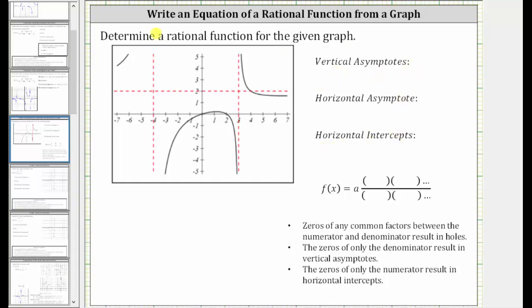We have vertical asymptotes at x equals negative four and x equals three. We have a horizontal asymptote of y equals two. And we have two horizontal intercepts, or x-intercepts, here at the origin and the point two comma zero. So the horizontal intercepts are zero comma zero and two comma zero.